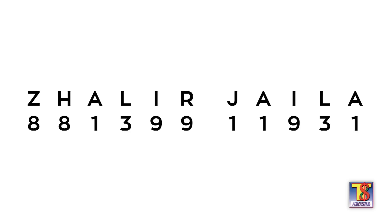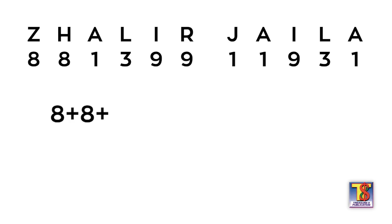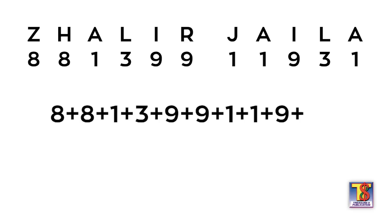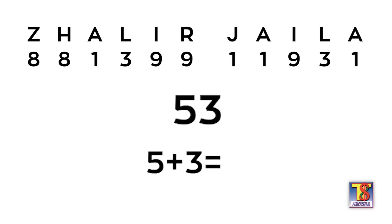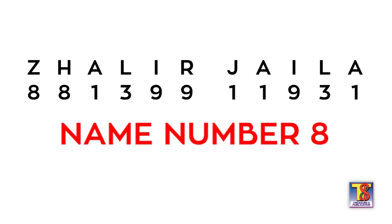Tignan lamang po sa chart ang kaukulang numero ng bawat letra. Ngayon atin pong susumahin: 8 plus 8 plus 1 plus 3 plus 9 plus 9 plus 1 plus 9 plus 3 plus 1 equals 53. Mapapansin na dalawang digit ang lumabas — ito yung 53. Kung kaya atin po itong pag-iisahin: 5 plus 3 equals 8. Ngayon, malinaw po — ang name number ko ay nakuha sa number 8. Number 8 po yung aking name number.